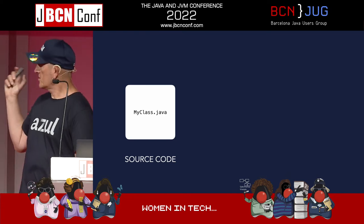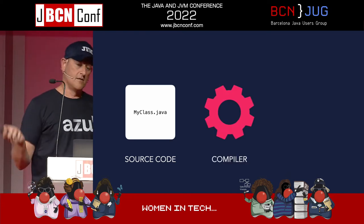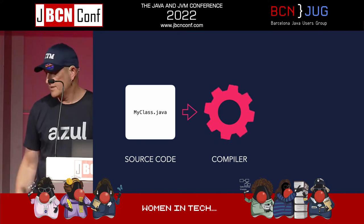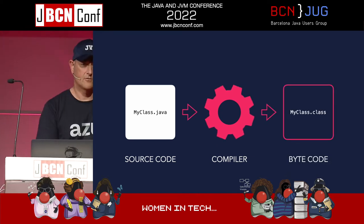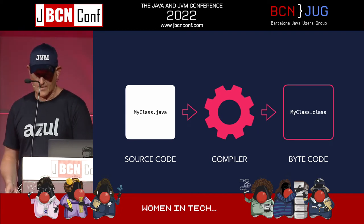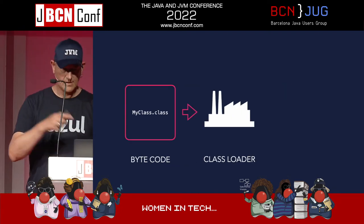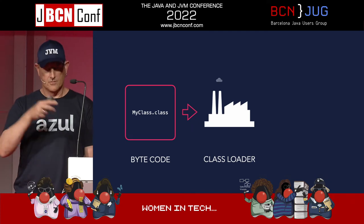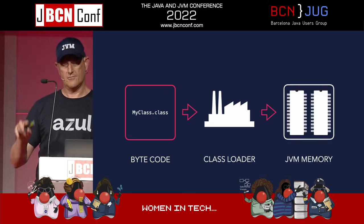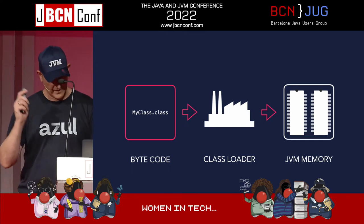If you have your Java code in a Java file, you put that through the javac compiler, it creates bytecode which is cross-platform usable. Then we take the bytecode and use a class loader to load that bytecode into JVM memory. This is a very simplified view but you get the idea.